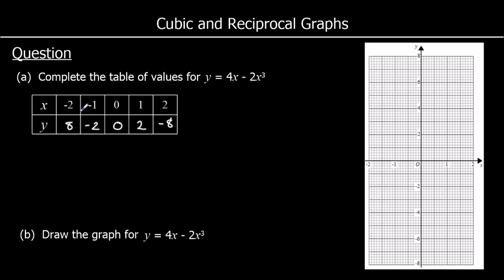Let's plot these on the graph: (−2, 8), (−1, 6), (0, 0), (1, 2), (2, −8). We've got a graph that's going to cross the x-axis 3 times. It's a negative x cubed, so it starts at the top left and ends in the bottom right — it's going down. A positive graph goes up, and a negative graph goes down. Let's join them up, and it looks something like that.